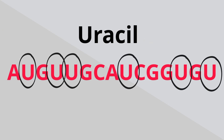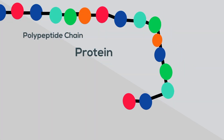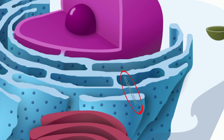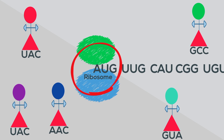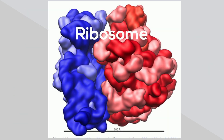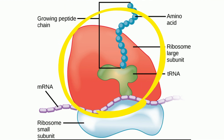Next up we have translation. Translation occurs at the ribosome and is an important stage of protein synthesis. Messenger RNA that has traveled from the nucleus arrives at a ribosome. Ribosomes are found in the cytoplasm and in some cells at the ER. Ribosomes are protein-making machines and are made up of rRNA and proteins. Ribosomes consist of two major components: the small subunit, which reads the RNA, and the large subunit, which joins amino acids to form a polypeptide chain.